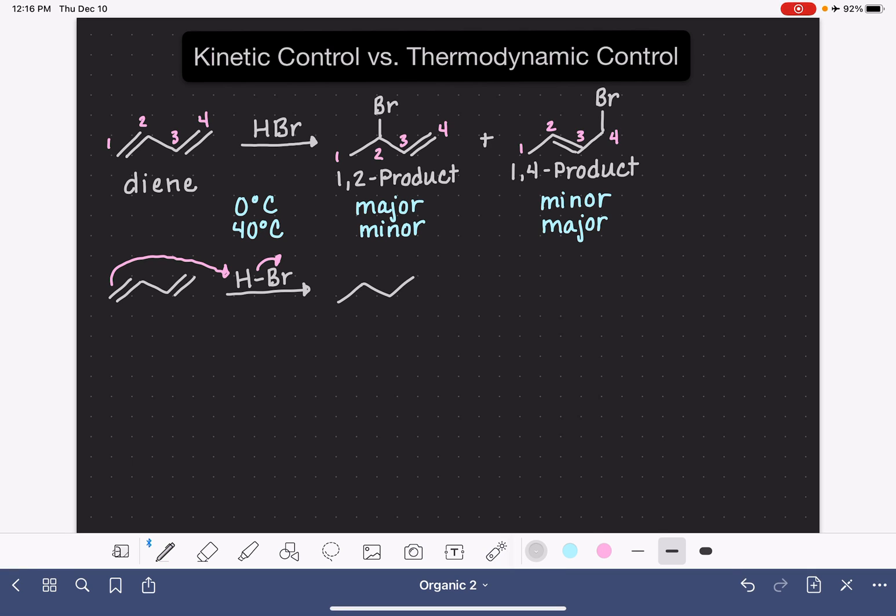This is a Markovnikov addition reaction, so the hydrogen is adding to the carbon that has the most hydrogens already present and this gives us this carbocation secondary, but it is also allylic, so it is pretty stable.